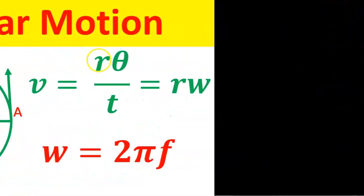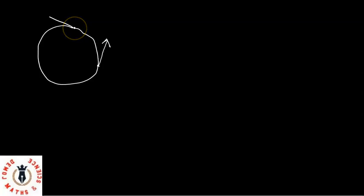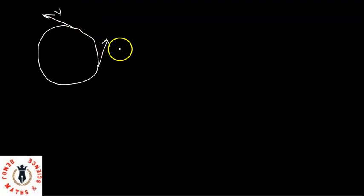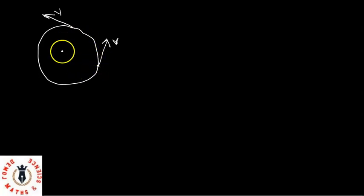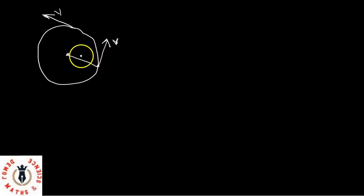If I have an object moving in a circular path like this, this object at any point on this circle has velocity. And we'll say this velocity is what is constant — the velocity V of this object is uniform, is constant. It's moving at a uniform velocity. And this circle obviously has a center and has a radius.